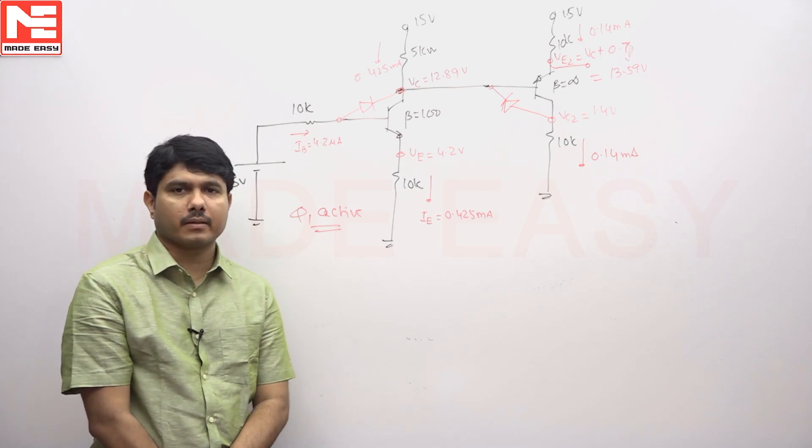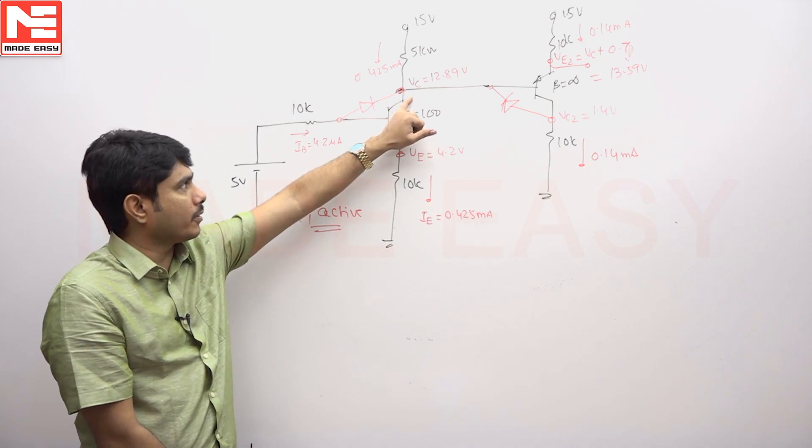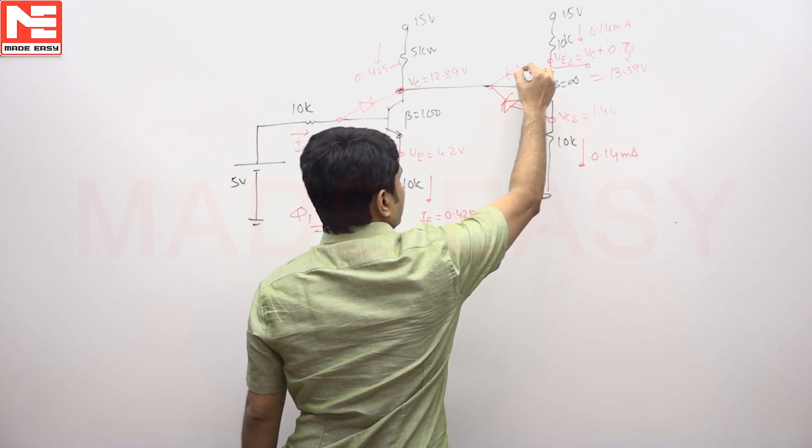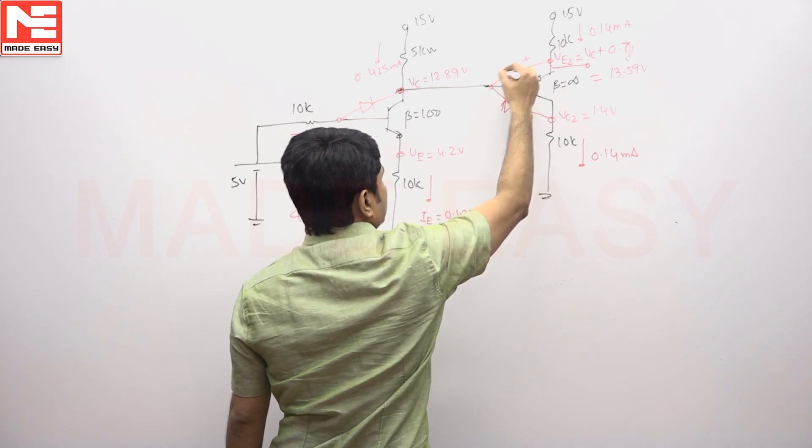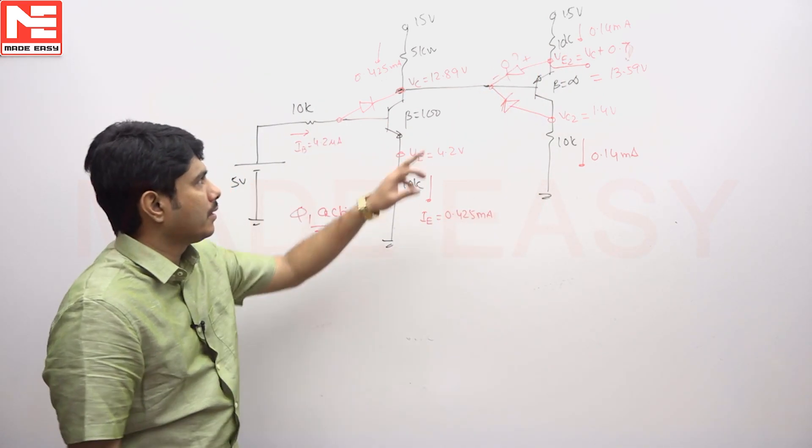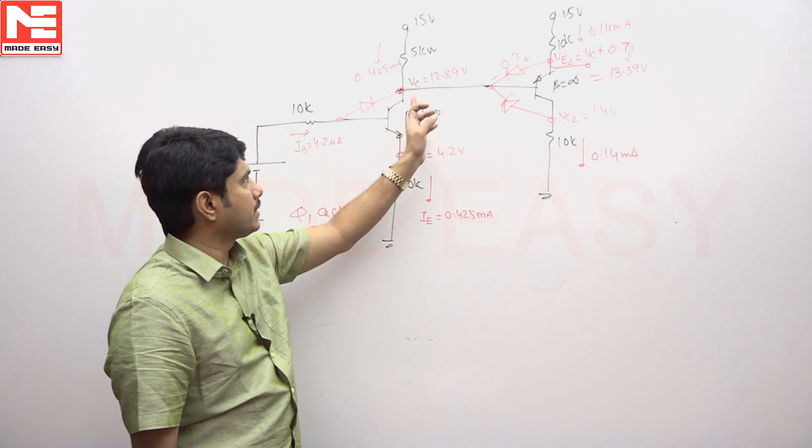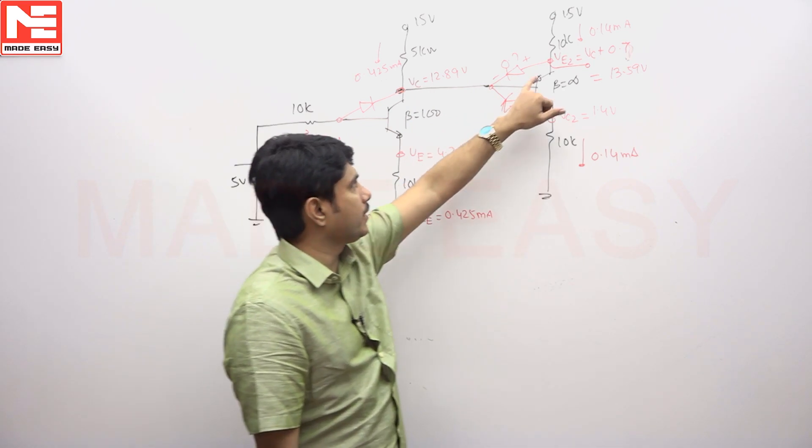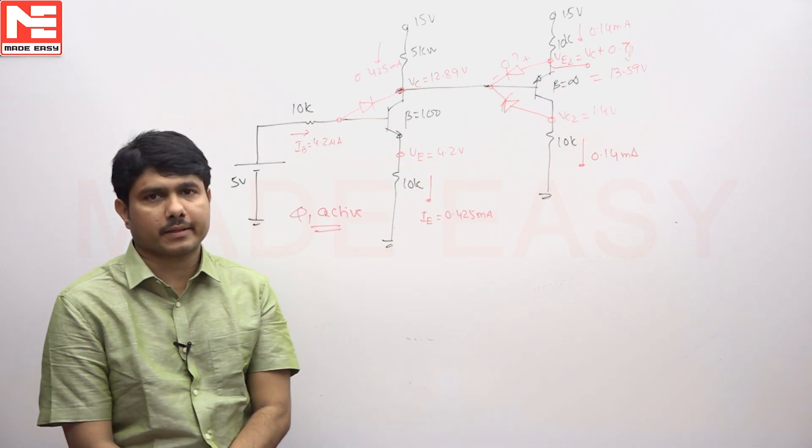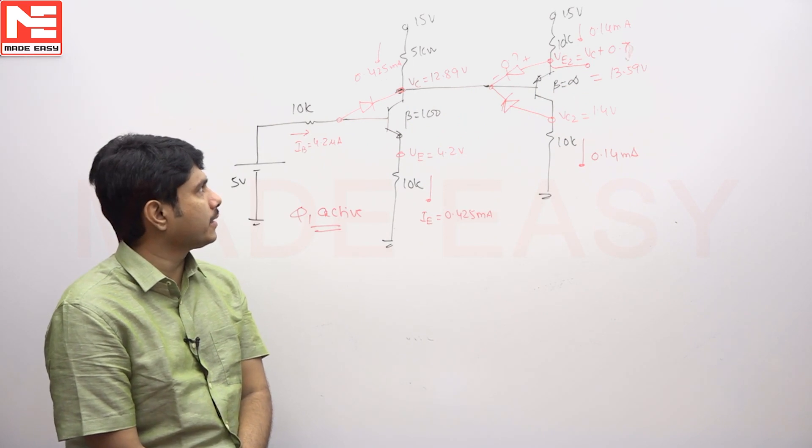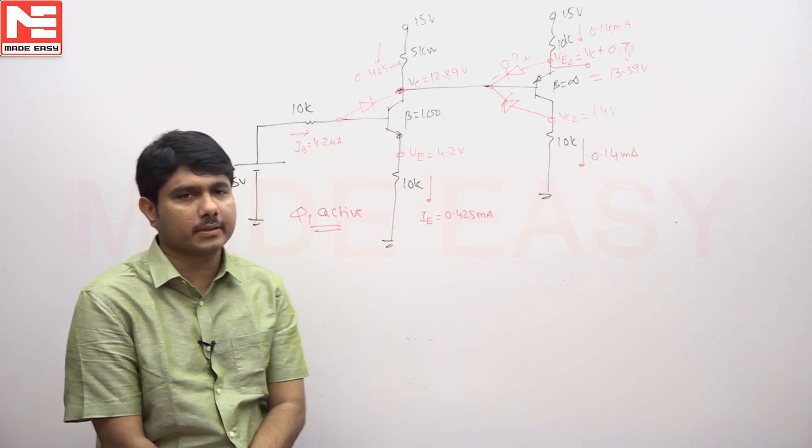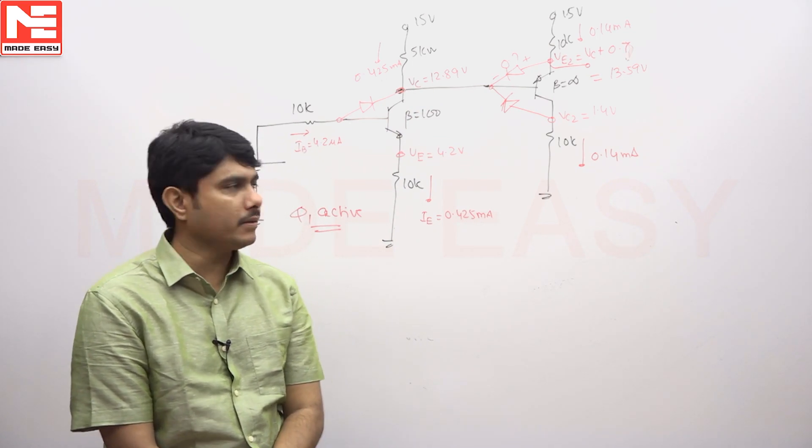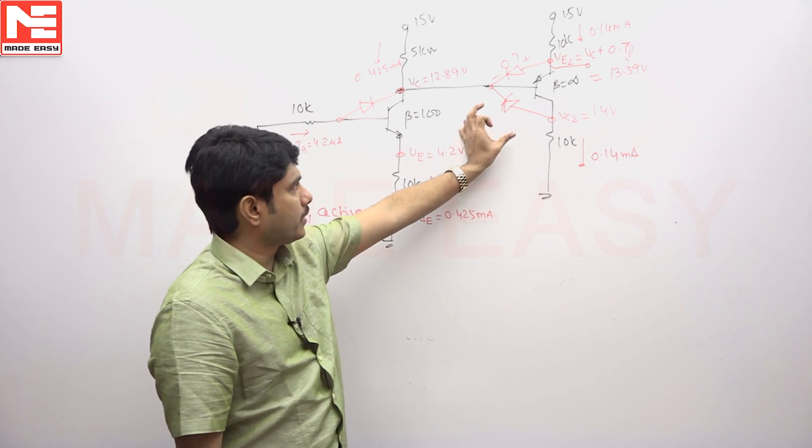It is confirmed that the first transistor is working under active. This potential is 12.89. There is a diode here which is getting on by 0.7, then VC plus 0.7 will be the VA2 answer. So VA2 equals VC plus 0.7. VC is 12.89 plus 0.7, which is coming to 13.59. You should not tell that answer yet because you have to check this diode position.